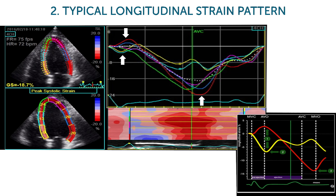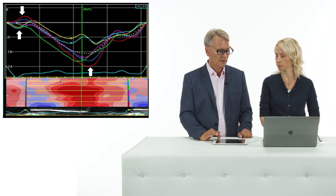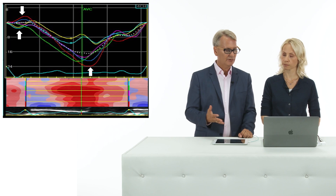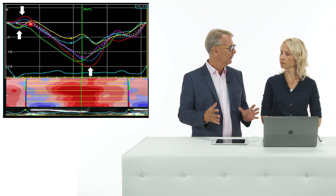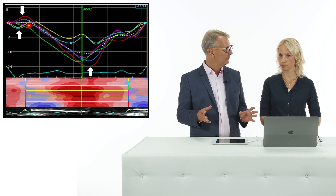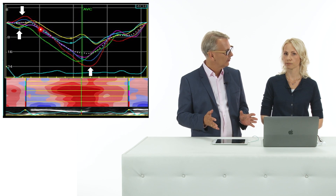I would like to share some tips — some very simple things which we can assess by echocardiography to help us assess the mechanics of the left ventricle. A specific longitudinal strain pattern has been described recently, including three major points. If you have this pattern, it would be typical for the classic type of left bundle branch block, where you would also see the septal flash.